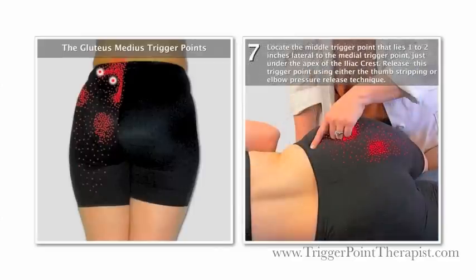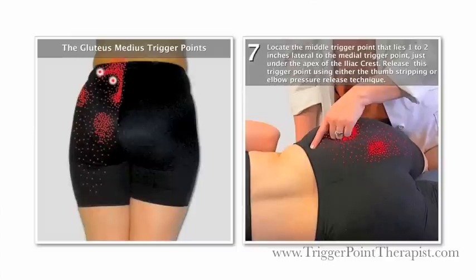Next we'll locate and release the middle gluteus medius trigger point. This trigger point lies one to two inches lateral to the medial trigger point, just under the apex of the iliac crest. Notice the referred pain pattern, which includes the entire gluteal region. Release this trigger point using either the thumb stripping technique or elbow pressure release technique as previously described.